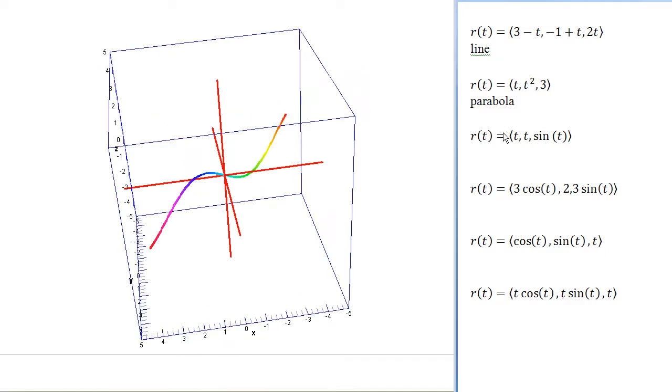Okay, let's look at the next one. So looking at t, t, sine t, we can see that the z value is going to oscillate as t goes on, because the sine is going to oscillate up and down. Meanwhile, x and y are going to increase, and here x is equal to y.